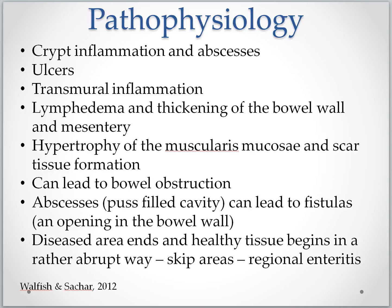Transmural spread of inflammation leads to swollen lymph vessels and lymph nodes, and a thickening of the bowel wall and mesentery. Extensive inflammation may result in hypertrophy of the muscularis mucosa and scar tissue formation, which can lead to bowel obstruction. Abscesses and fistulas are often seen. Abscesses are pus-filled sacs, and fistulas are areas where the intestine has an opening from the inside to the outside, sometimes to other organs or structures within the abdominal cavity.